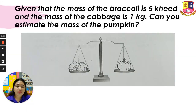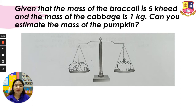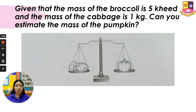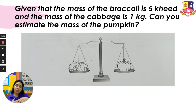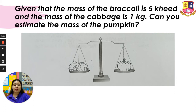Given that the mass of the broccoli is 5 kid and the mass of the cabbage is 1 kilogram, can you estimate the mass of the pumpkin? If we add the mass of the broccoli and the mass of the cabbage, that will give us the mass of the pumpkin.